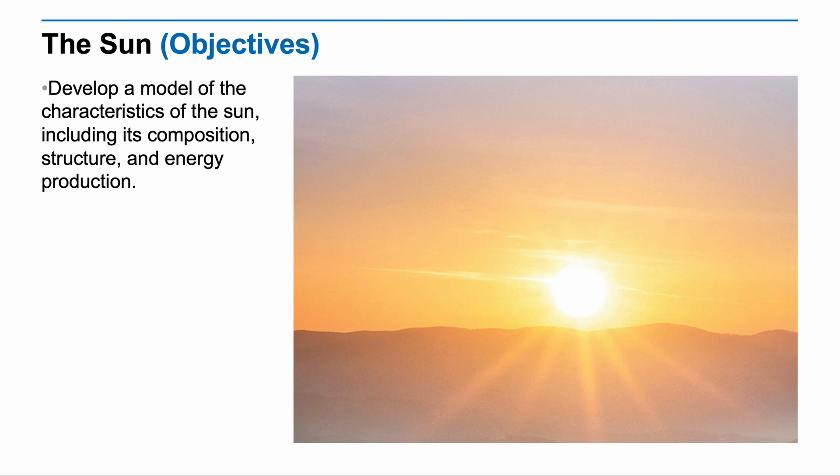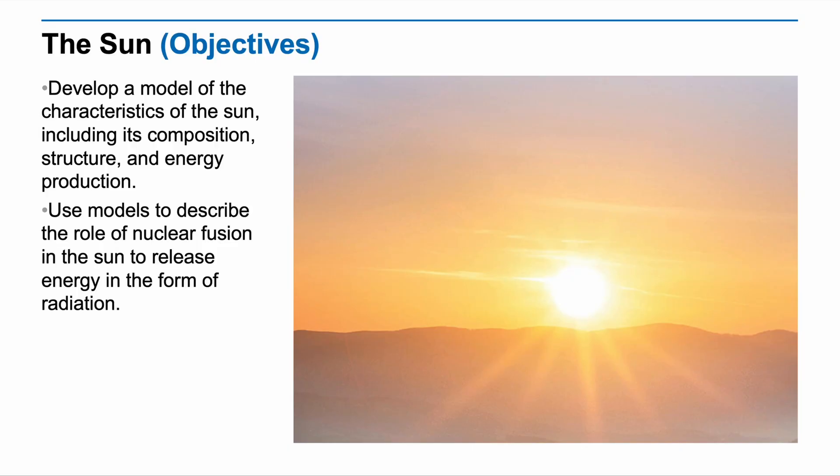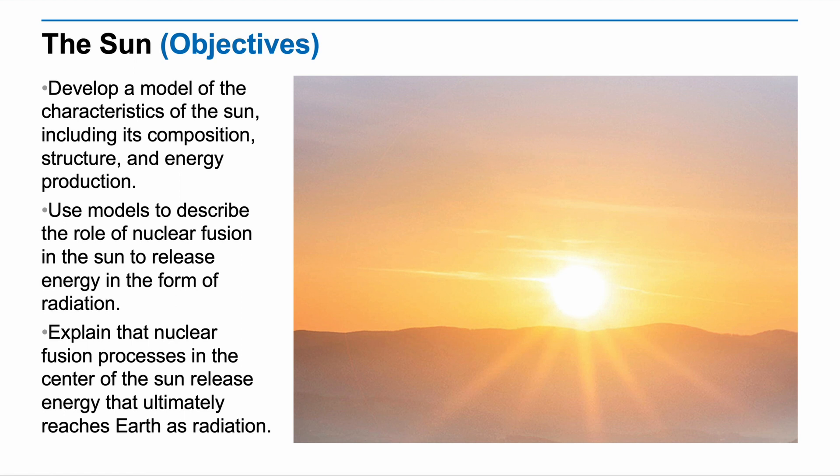In this experience, we aim to accomplish the following three objectives. 1. Develop a model of the characteristics of the Sun, including its composition, structure, and energy production. 2. Use models to describe the role of nuclear fusion in the Sun to release energy in the form of radiation. 3. Explain that nuclear fusion processes in the center of the Sun release energy that ultimately reaches Earth as radiation.